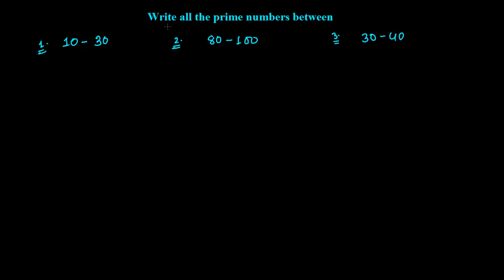The question asks us to write all the prime numbers between 10 to 30, 80 to 100, and 30 to 40. We have already discussed what prime numbers are and how to find them — we had done that from 1 to 100 previously.